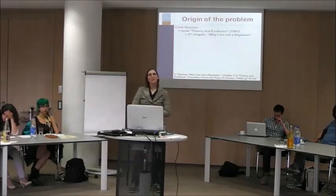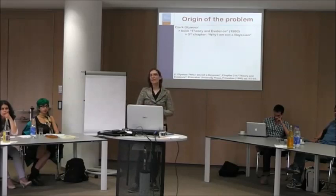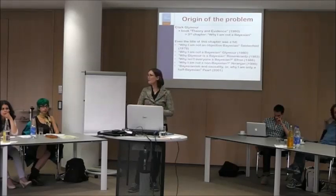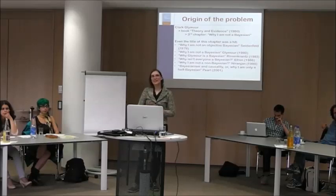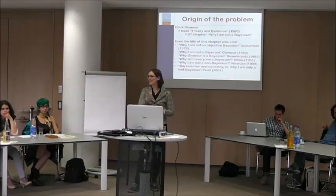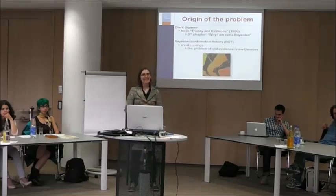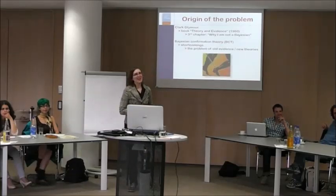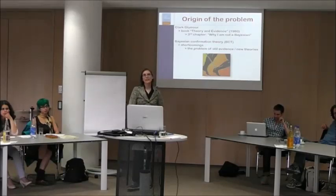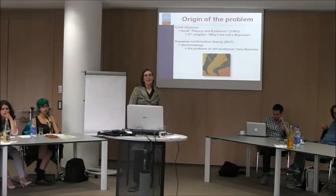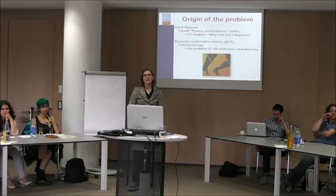The classical reference for the problem of evidence and new theories is Clark Glymour's book, Theory and Evidence, and in particular the chapter called 'Why I'm Not a Bayesian.' The title seems very popular — there are many similar titles, like 'Why Glymour is a Bayesian,' 'Why isn't everyone a Bayesian,' 'Why I'm Not a Non-Bayesian.' The content of the chapter is a discussion of Bayesian confirmation theory, especially identifying certain shortcomings, one of which is the problem of evidence and new theories.